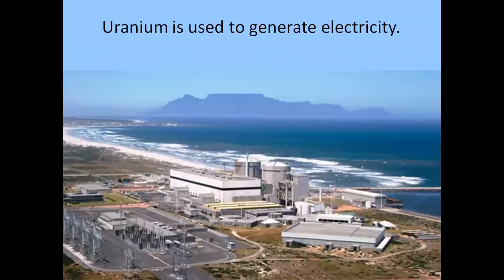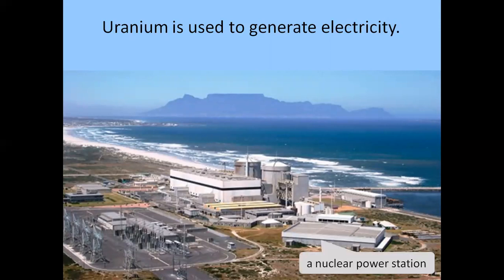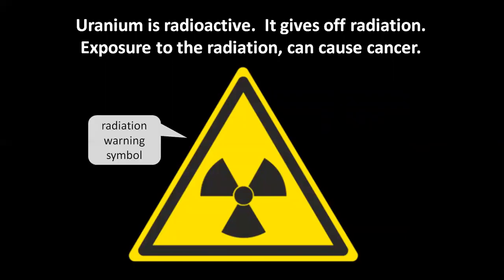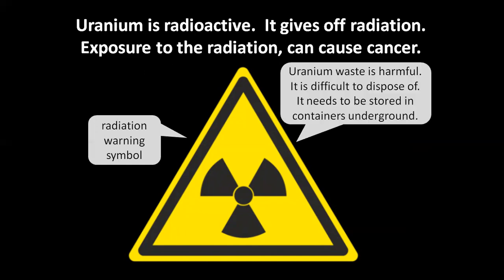Uranium is used to generate electricity at a nuclear power station. Uranium reserves may last 90 years. Uranium is radioactive — it gives off radiation, and exposure to radiation can cause cancer. This is the radiation warning symbol. Uranium waste is harmful, difficult to dispose of, and needs to be stored in containers underground.